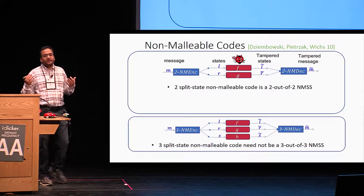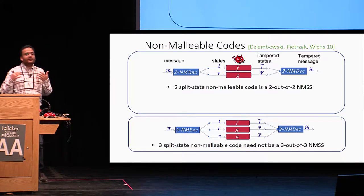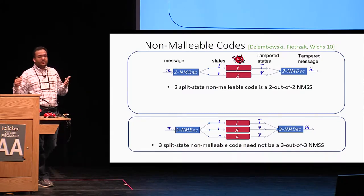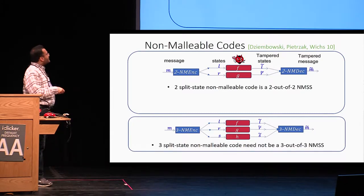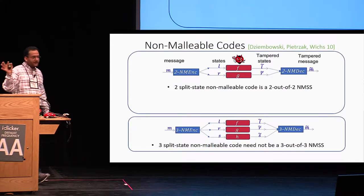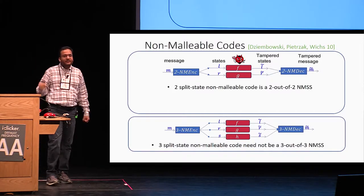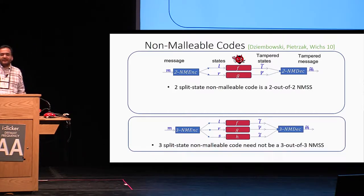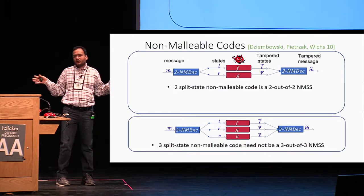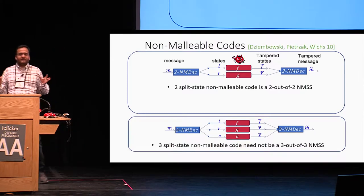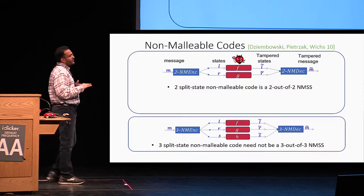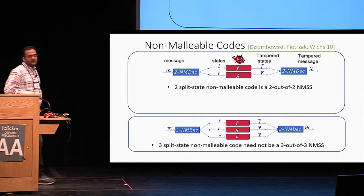It is easy to construct examples of three-split-state non-malleable codes which are not three-out-of-three non-malleable secret sharing. For example, you can divide your message into two parts using any two-out-of-two split-state non-malleable code, and in the third state, put the message entirely in the clear. This would still be a valid three-split-state non-malleable code, but clearly not a three-out-of-three non-malleable secret sharing — it has no secrecy whatsoever, and the third state reveals the message entirely. Nonetheless, our notion is directly inspired by these works on non-malleable codes.